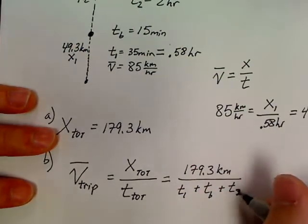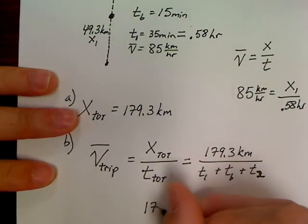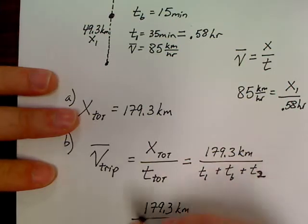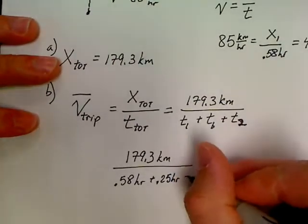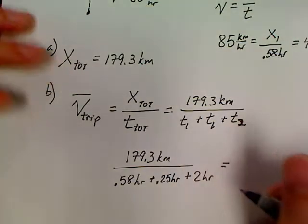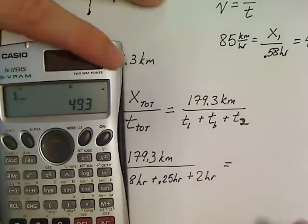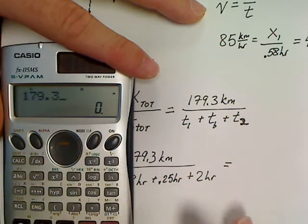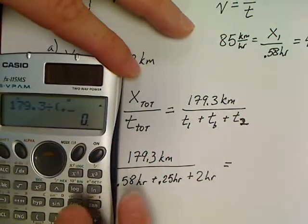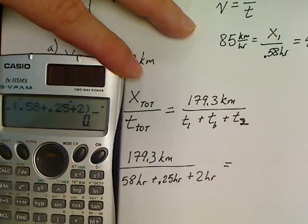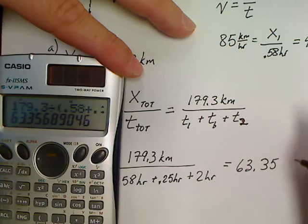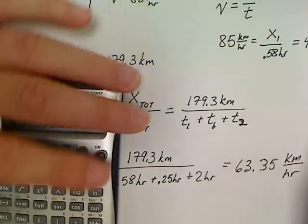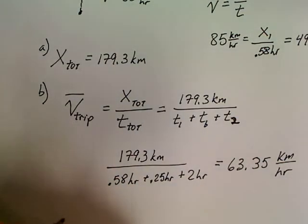So, you actually had three times in this problem. So, when you go to calculate this, it's 179.3 kilometers over 0.58 hours plus a quarter of an hour for the break, it was 15 minutes, plus the two hour last section. So, that's the way we found this average velocity. So, in the case of this problem, we'd have 179.3 divided by 0.58 plus 0.25 plus 2, which equals 63.4 kilometers per hour. There's my average velocity for the entire trip.